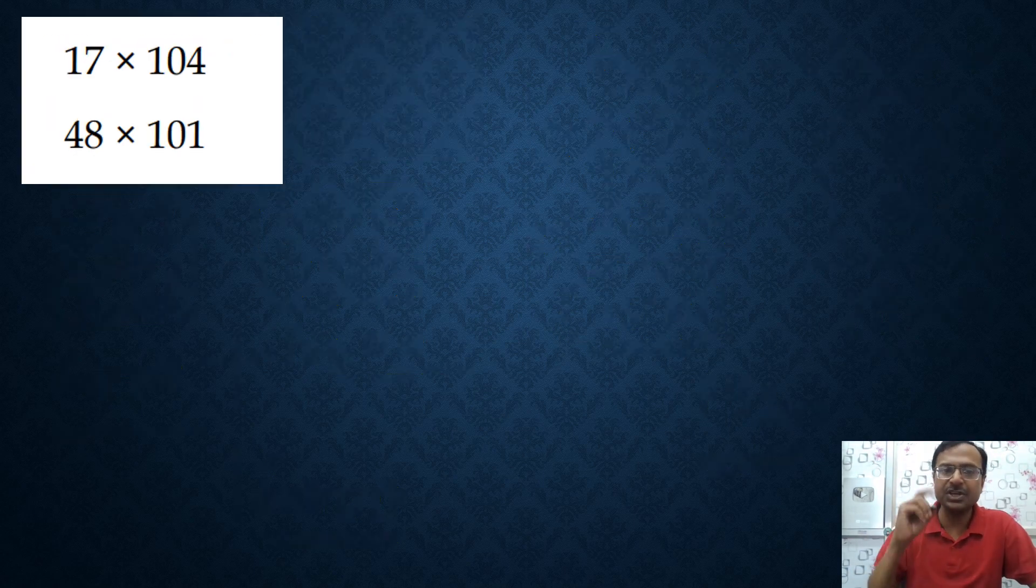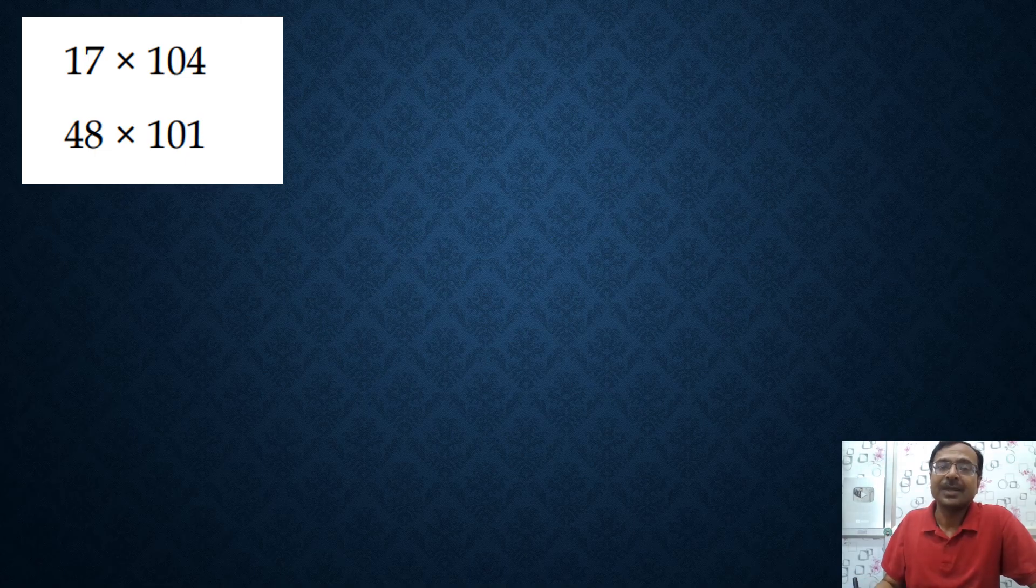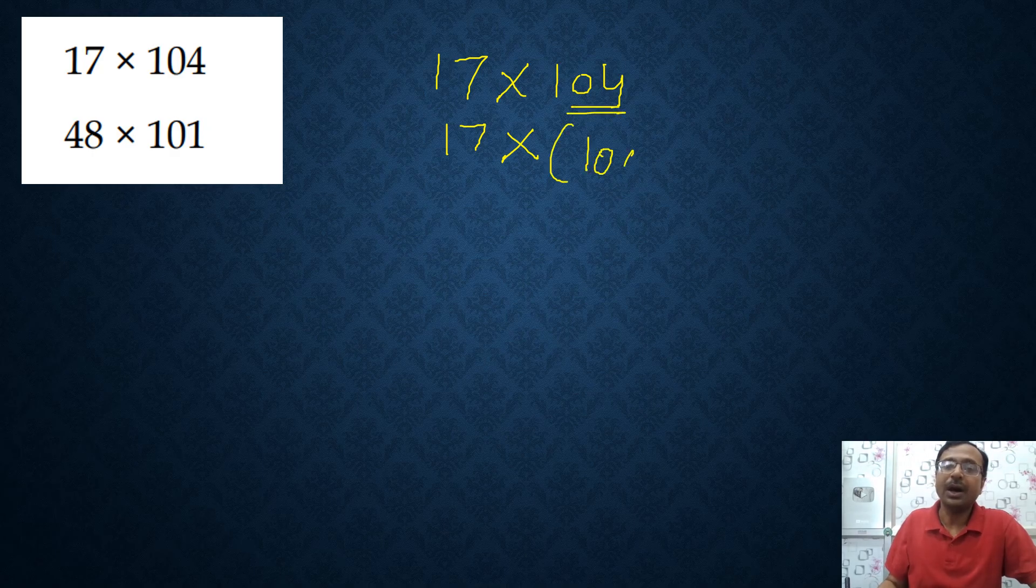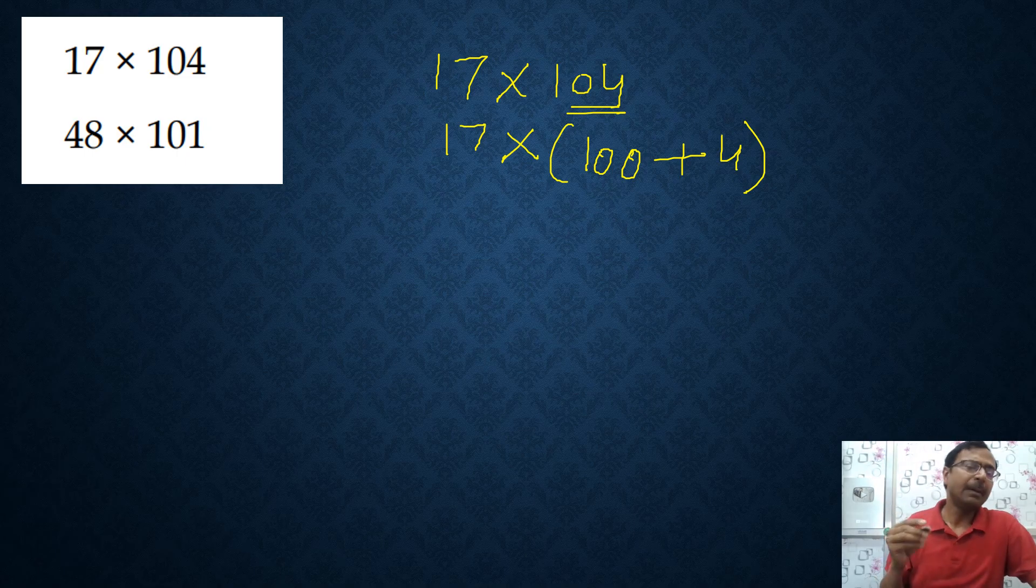Here is the multiplication process. What property can we use here? 17 is a random number and 104 is very close to the base quantity 100. So what I am going to do here is break this 104 into 100 plus 4 because that is very close to 100 and multiplication by 100 is really an easy job.